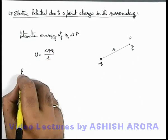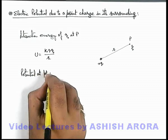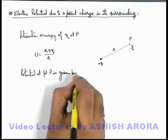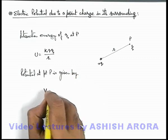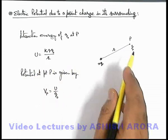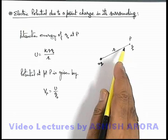So now we can write the potential at point P is given by V_P = U/q₀, because this U is the interaction energy of the test charge q₀, and potential is the interaction energy of a unit charge.